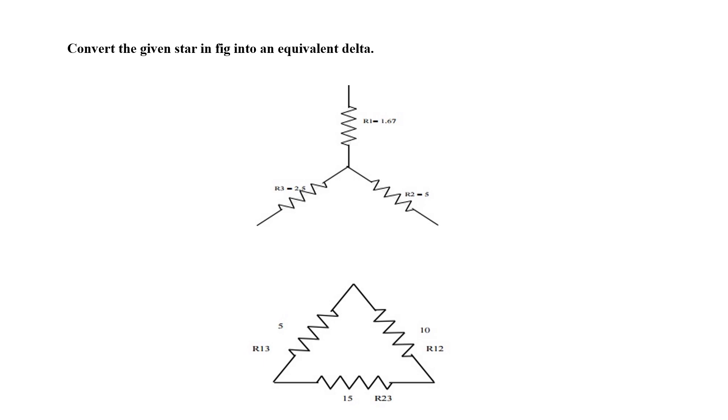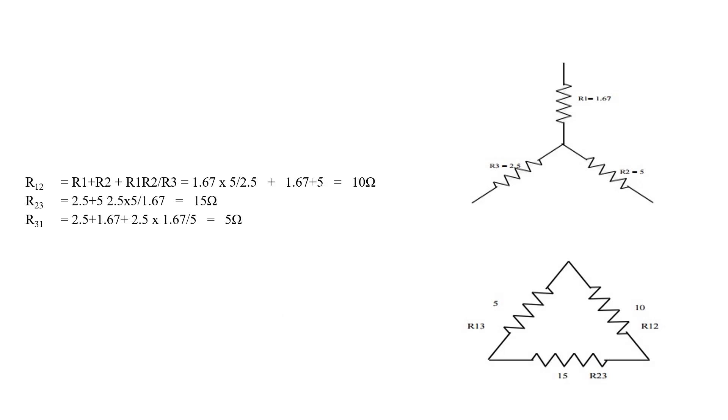In the given question, we can convert from star to equivalent delta by using the formula: R23 equals R2 plus R3 plus R2R3 divided by R1, and R12 equals R1 plus R2 plus R1R2 divided by R3. Using the formula, R13 equals R1 plus R3 plus R1R3 divided by R2. Using the formula, we get the results like this: R12, R23 and R31.